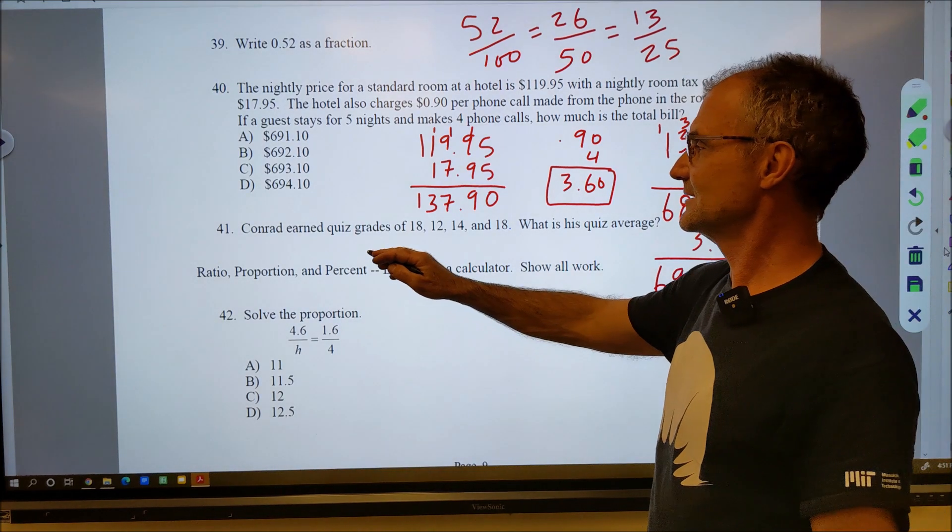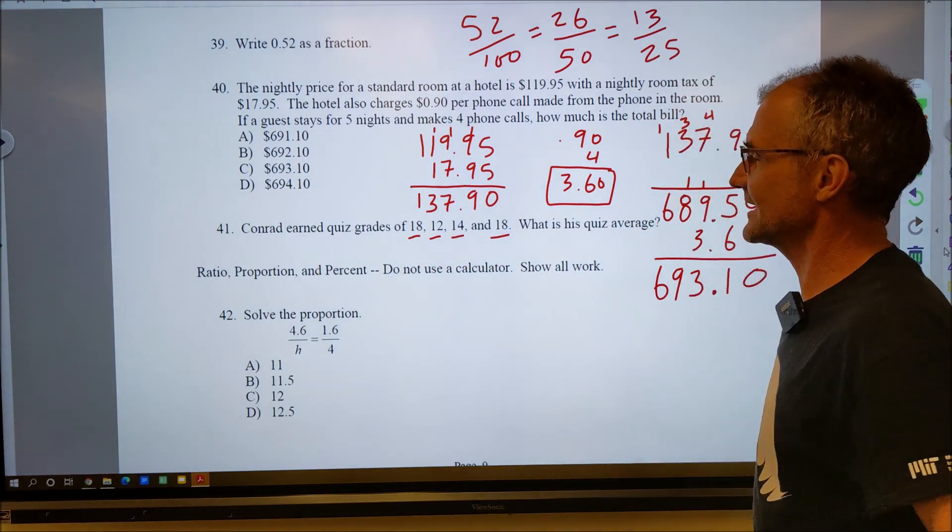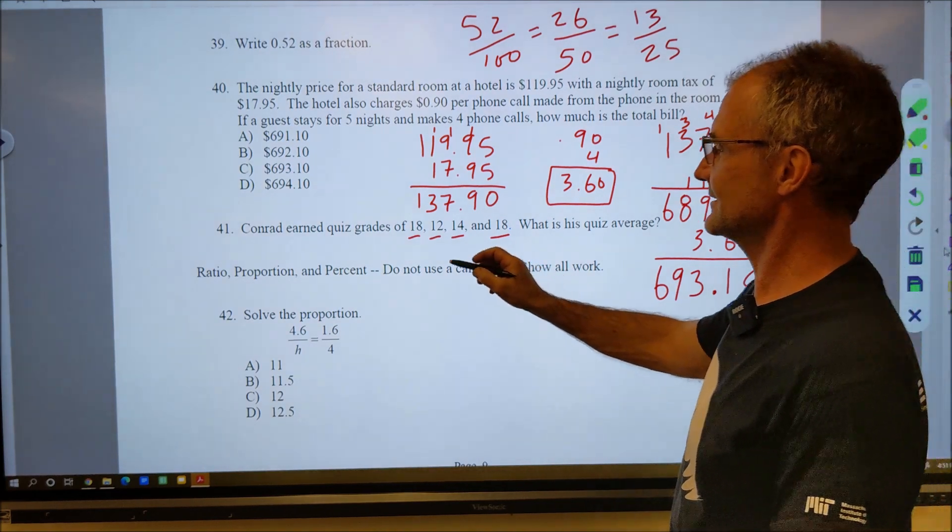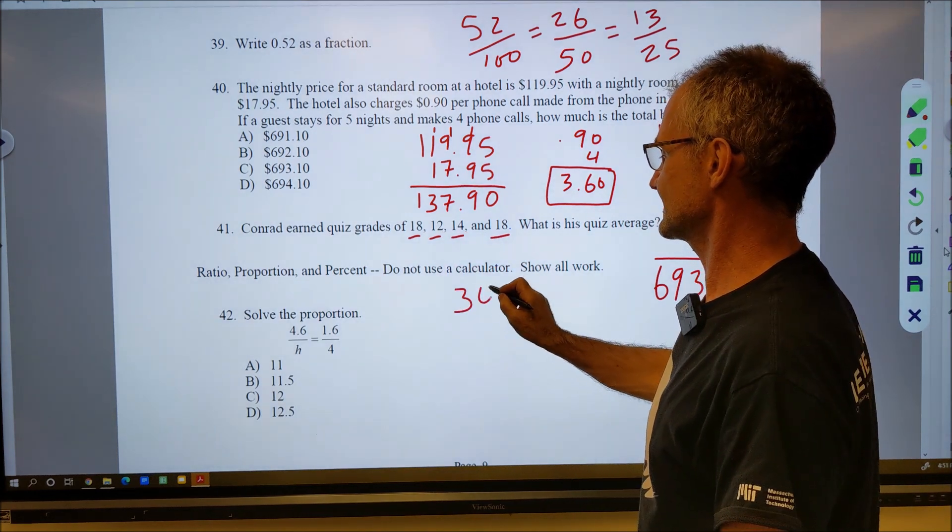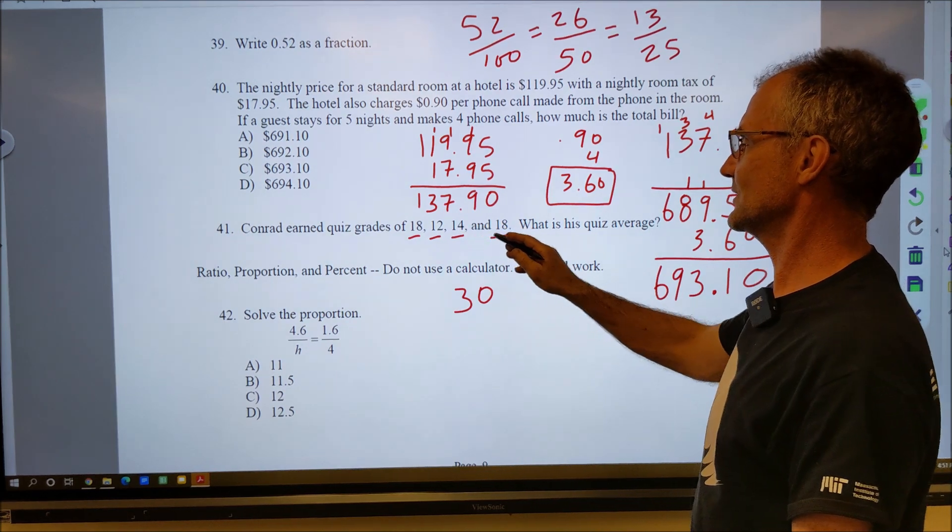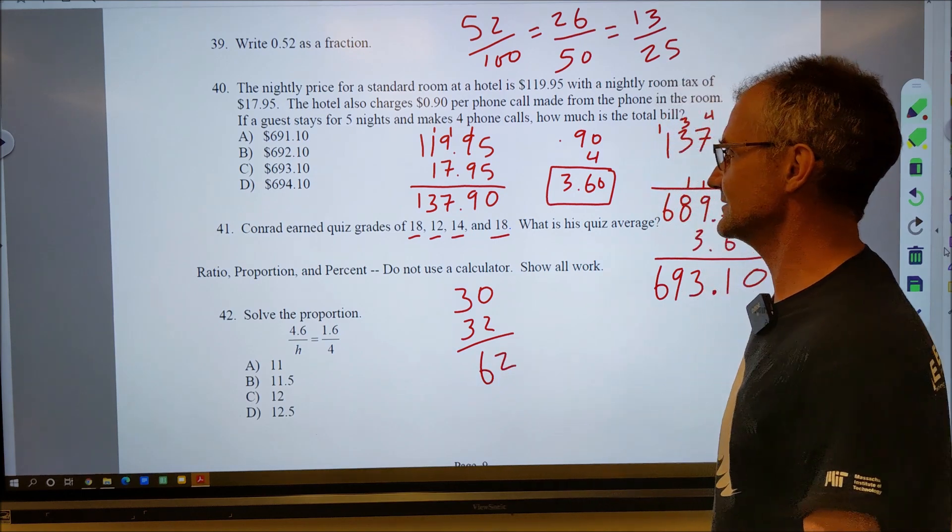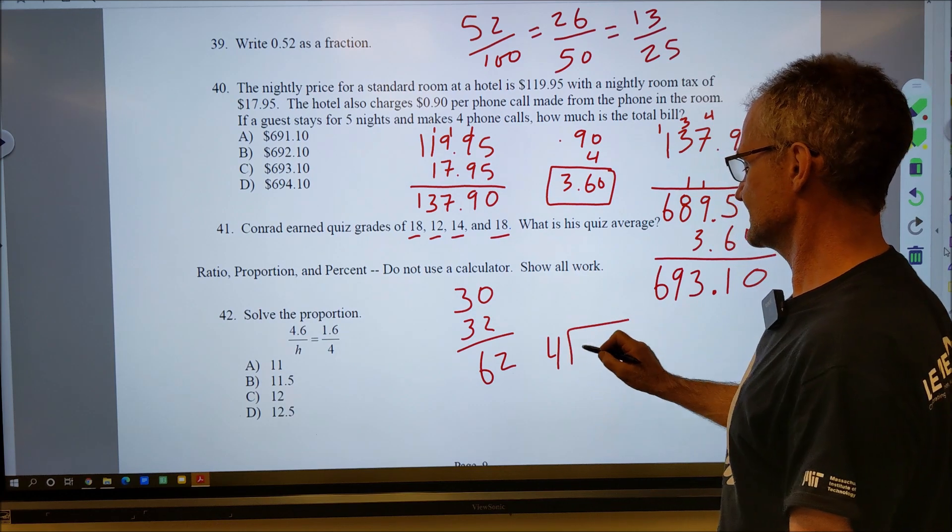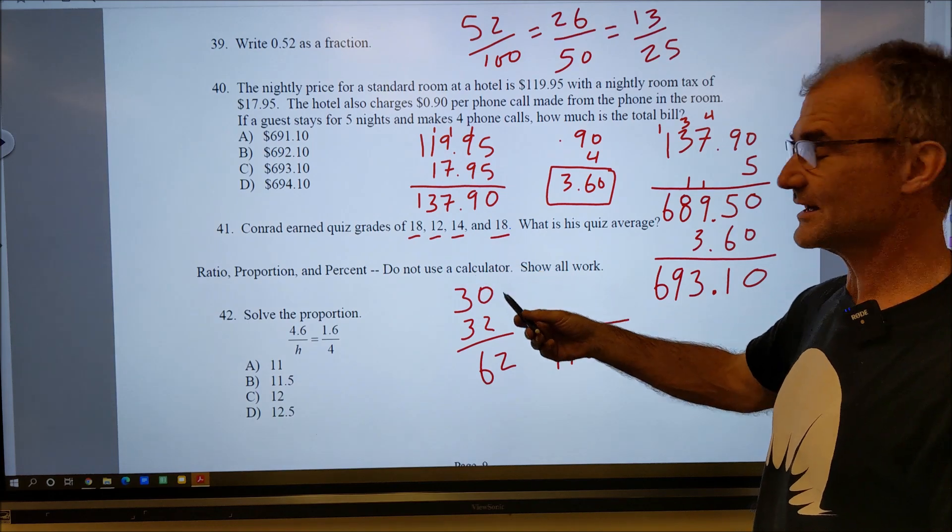Number 41: Conrad earned quiz grades of 18, 24, 14, and 18. What's his average? So I got to add those together. Just a quick look here, I have four values: 18 and 12, that's 30, that's going to add together nicely. And then 14 and 18 is 20, 32. So all of them add up to 62. There are four grades, so I do 4 into 62 to get the average. So it's the sum of all the values divided by the number of values.